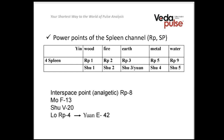The spleen channel is the earth channel. The first point, rp1, corresponds to the wood element. The earth point is point number three, rp3. The nomenclature 'rp' is connected to the French tradition, from 'region pancreas' — the name of this channel in French. If you see it mentioned as 'sp' (spleen and pancreas) in English, it is exactly the same channel.